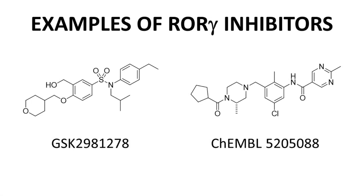Here are two known ROR gamma ligands. The GSK compound on the left has been in the clinic as a topical compound for the treatment of psoriasis, so it's not orally available. The compound on the right has not been in the clinic, but it is a potent ROR gamma ligand, so there is good precedent for designing potent ligands for this target. Designing ligands with ADME and PK properties for systemic exposure, however, has been a serious challenge. This finishes the introduction and background material.